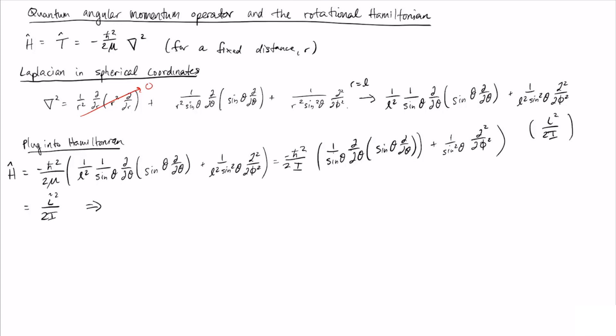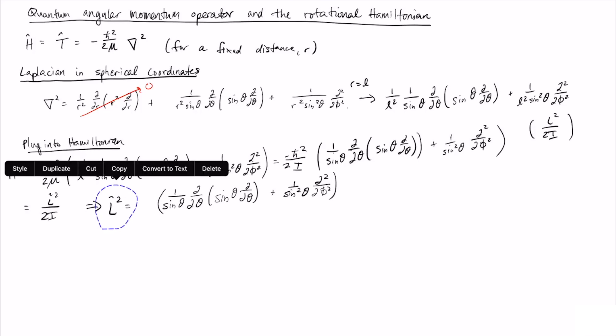We would see that all of this stuff here would be the quantum mechanical version of l². And so this implies that we have the L² operator is equal to minus ℏ² times this expression. So this gives us a quantum mechanical definition of the operator L².